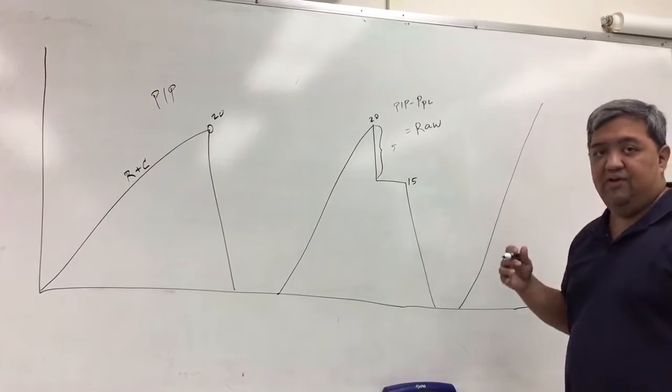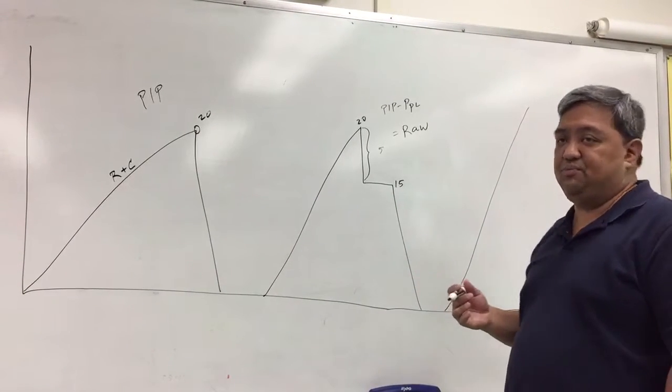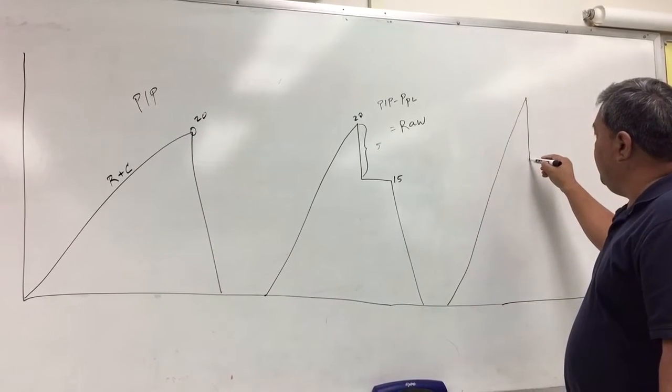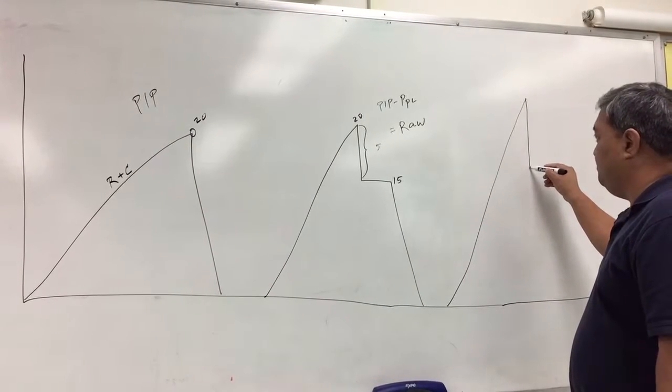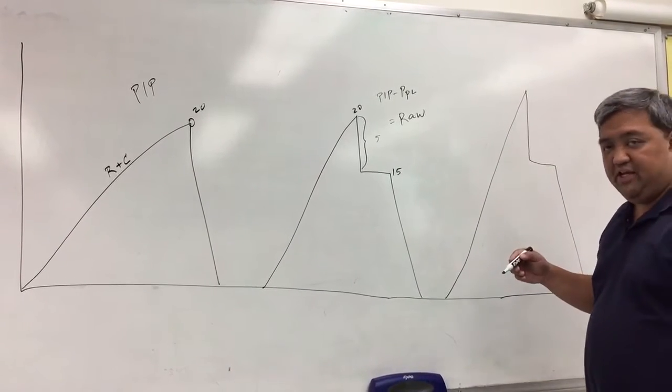In order to know if the problem with the patient is a resistance or compliance problem, we need to take a look at both the PIP and the plateau. In this particular case, if our peak